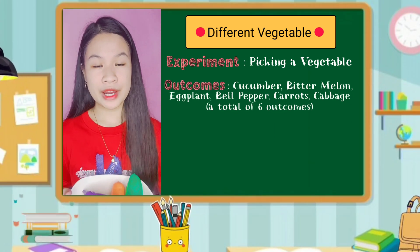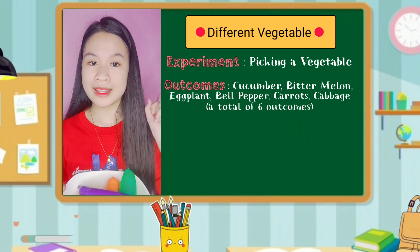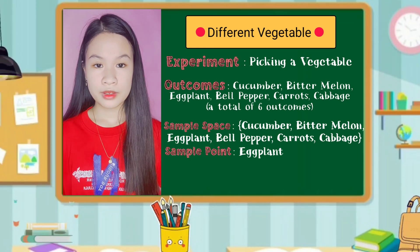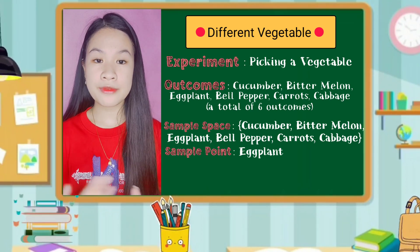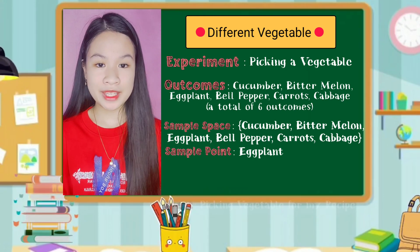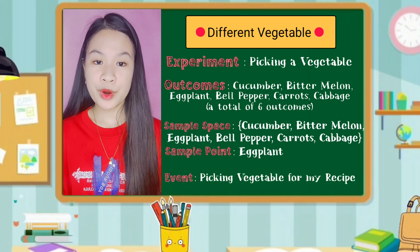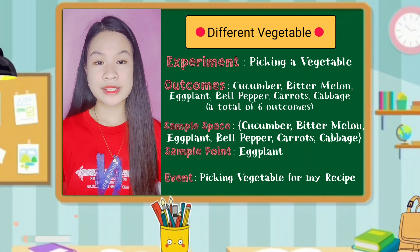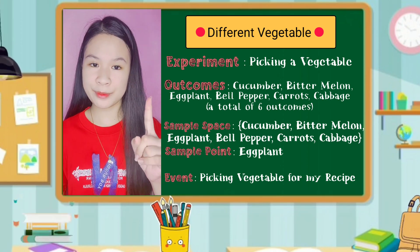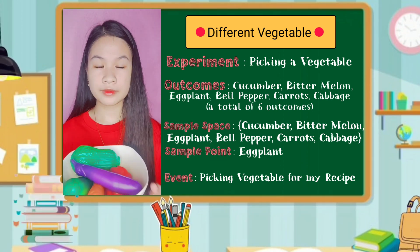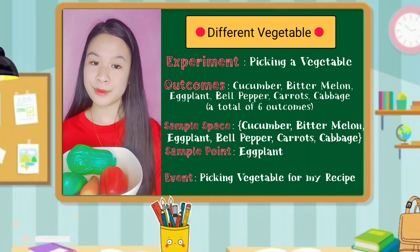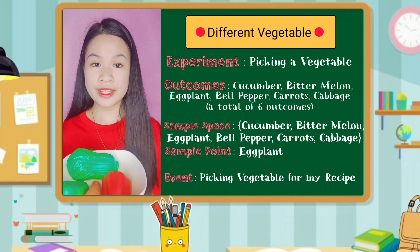I will try to pick one vegetable at a time, and the sample point is eggplant. The event of this experiment is picking a vegetable for my recipe. Since I have 6 vegetables, I will pick one vegetable — this eggplant — for my recipe.